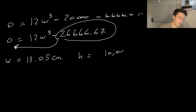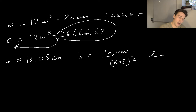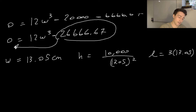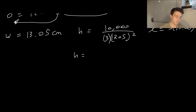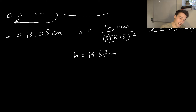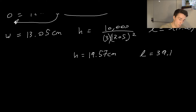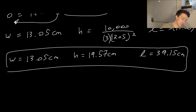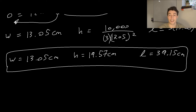H equals 10,000 divided by 3 divided by 13.05 squared, which gives H equals 19.57 centimeters. L equals 3 times 13.05, which equals 39.15 centimeters. And the width is 13.05 centimeters. Now we've stated all the dimensions that were required. That is problem number one.